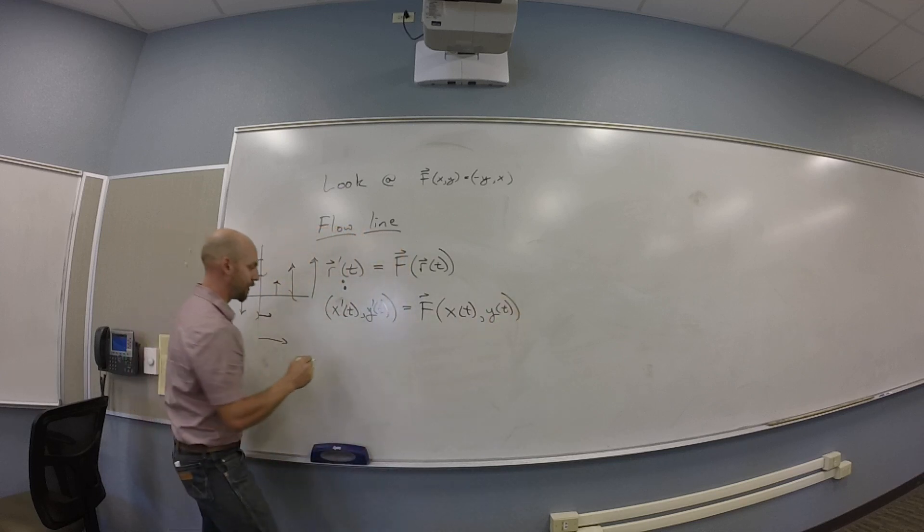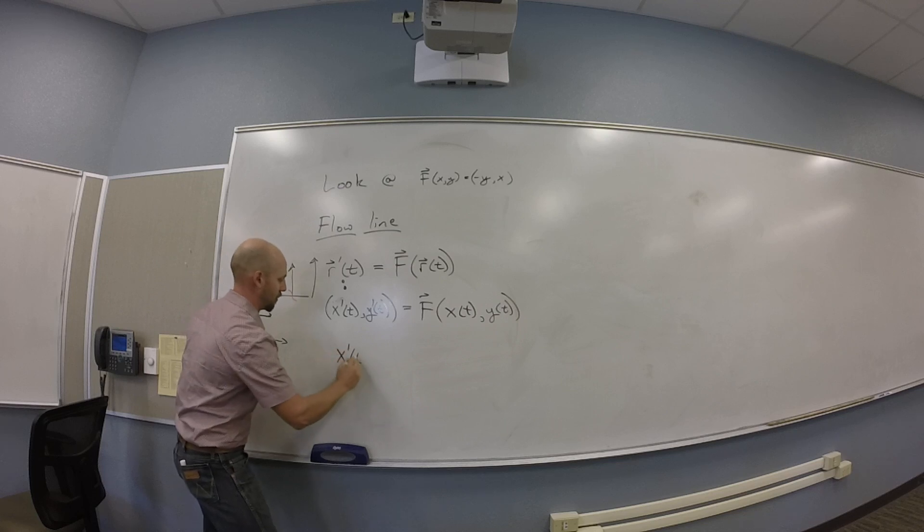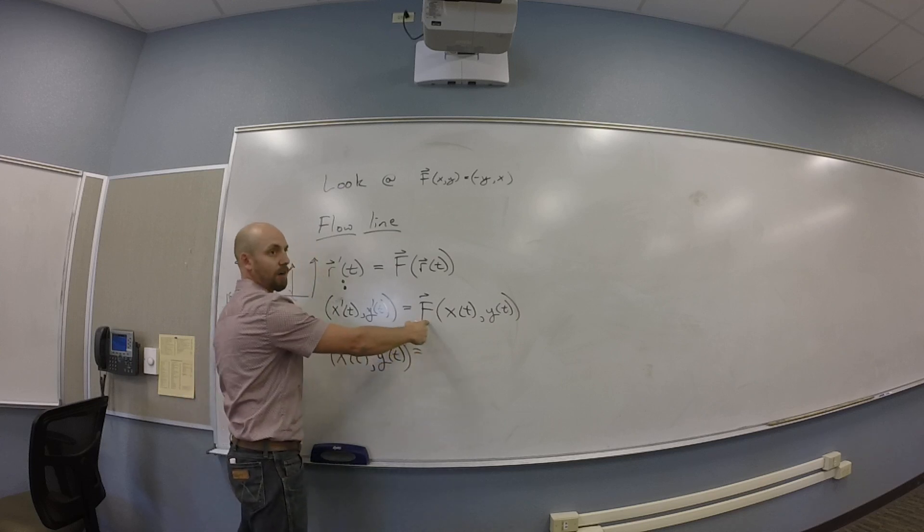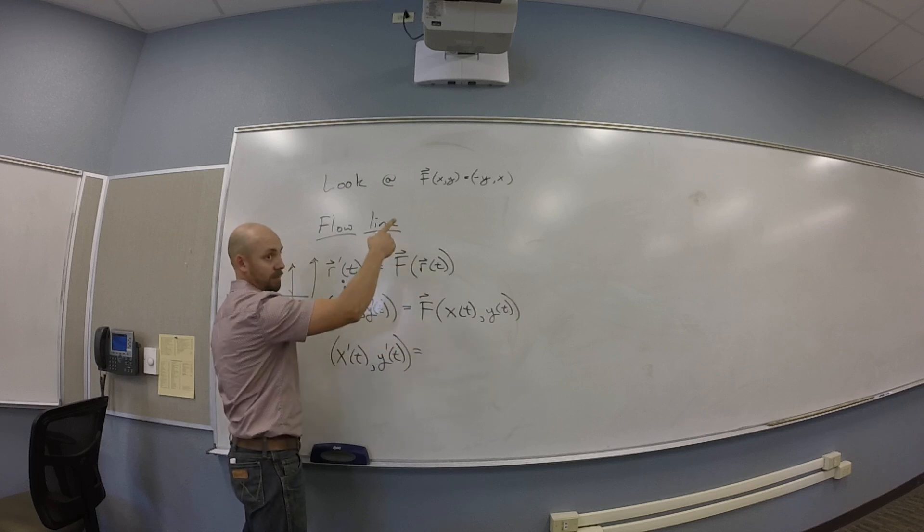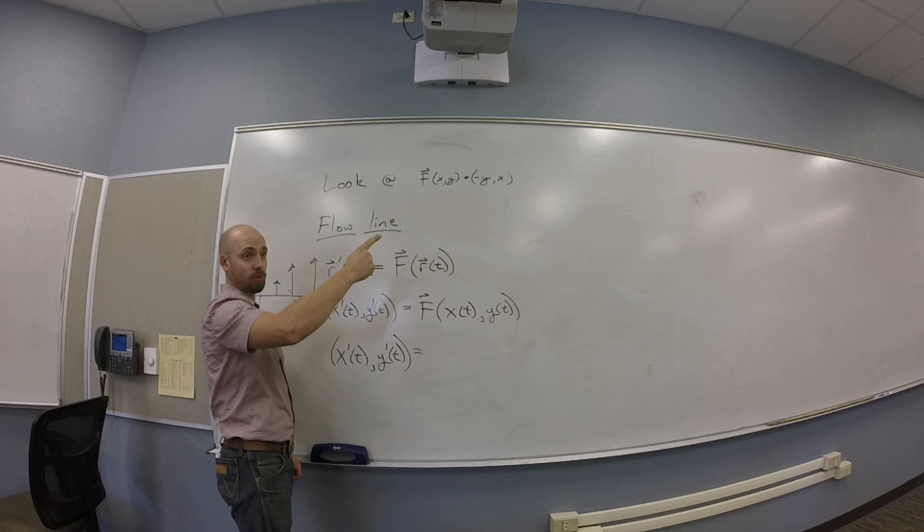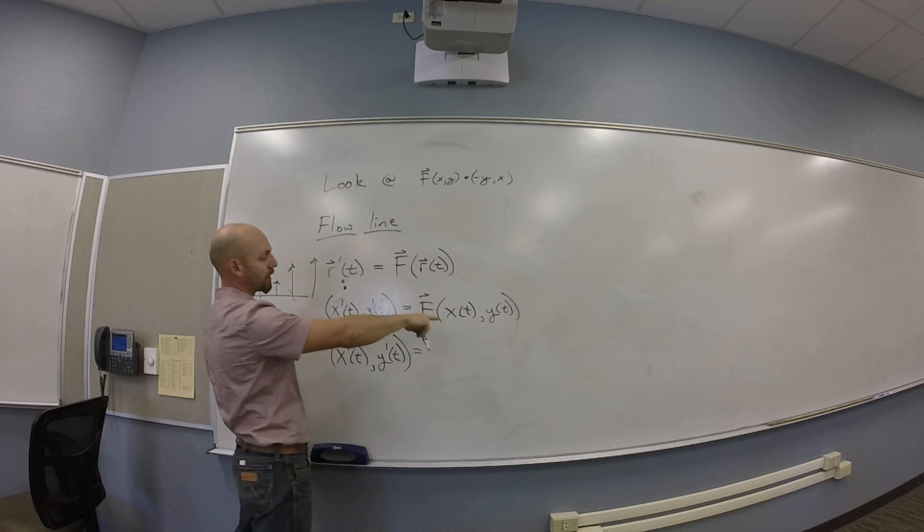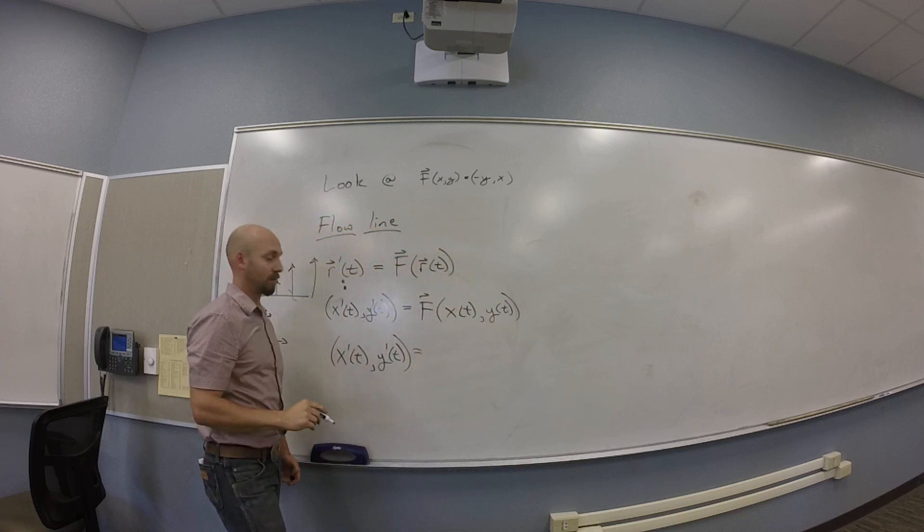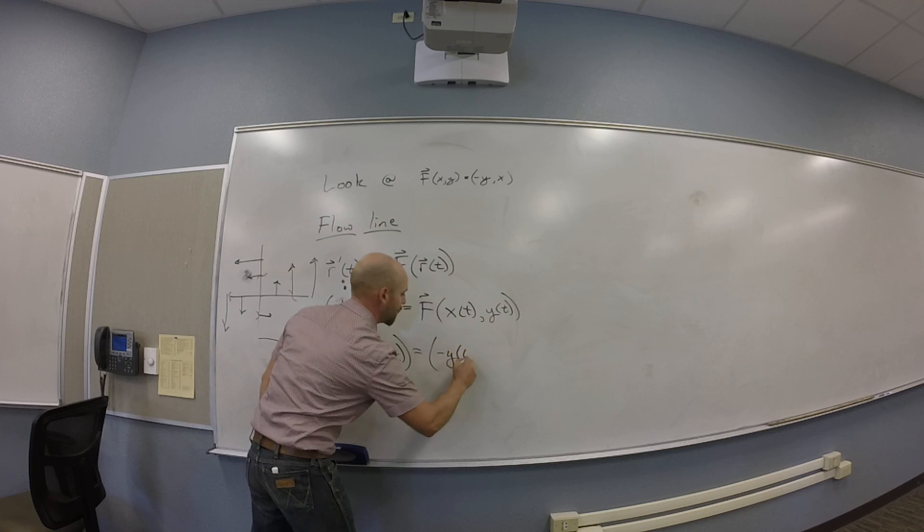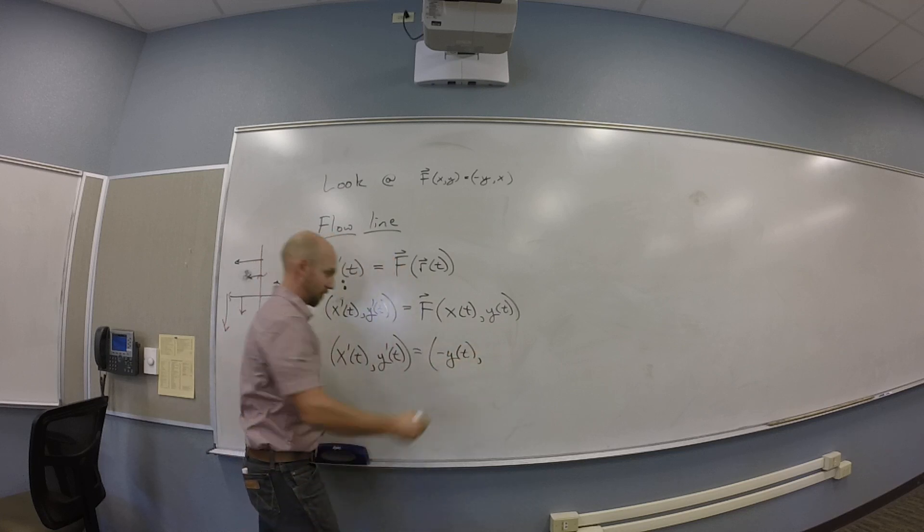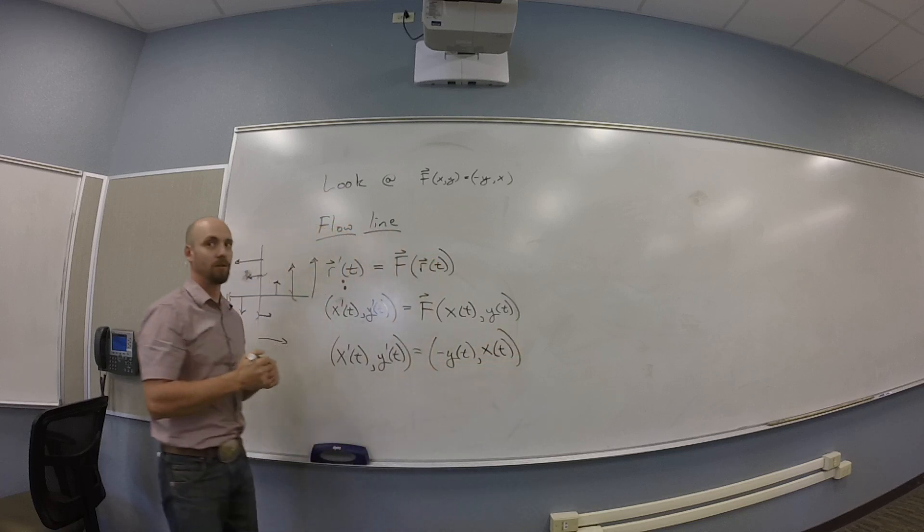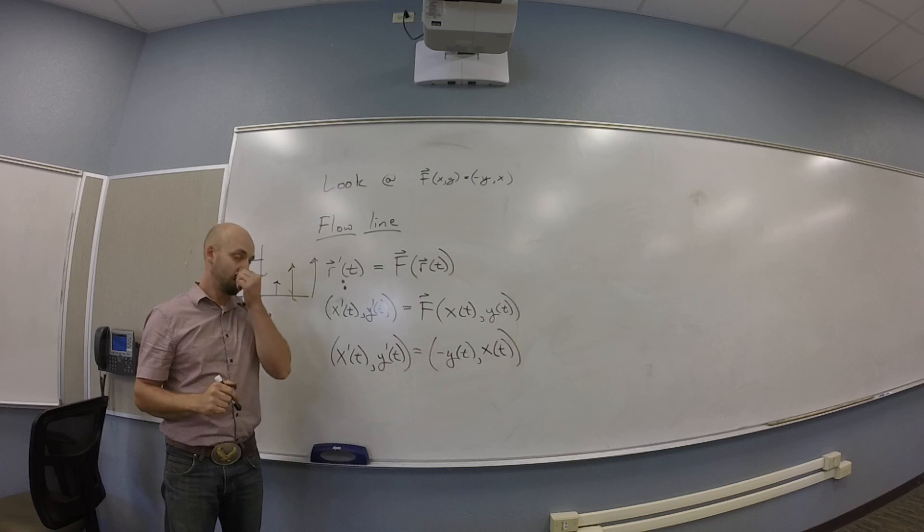But then what the heck does f do? What's f in this case? That's a vector field. Which vector field is it? It's the minus y comma x vector field. So what the heck do you get when you plug x of t and y of t into that? Negative y of t. Good. You get negative y of t comma x of t. You guys all good with that?